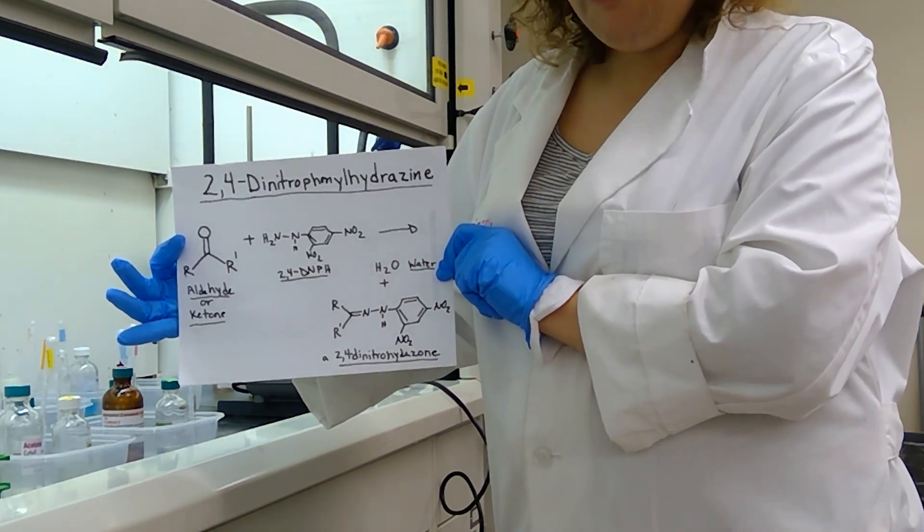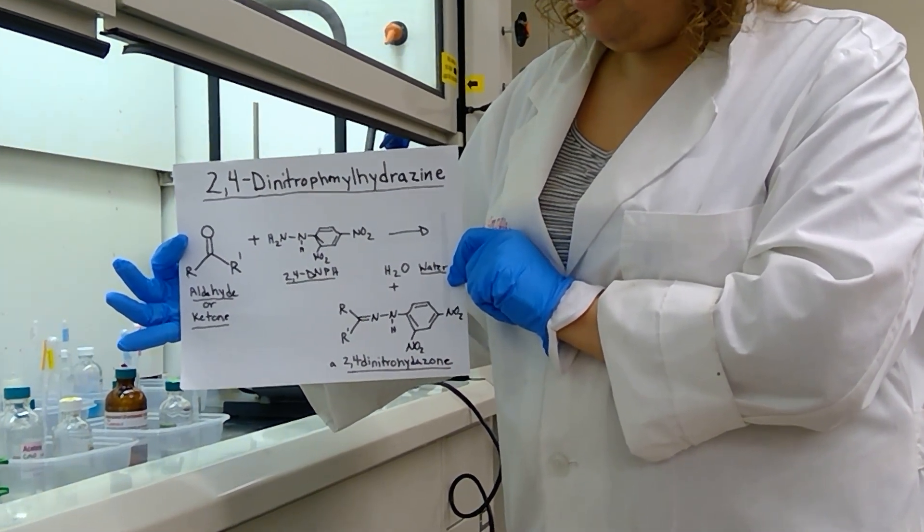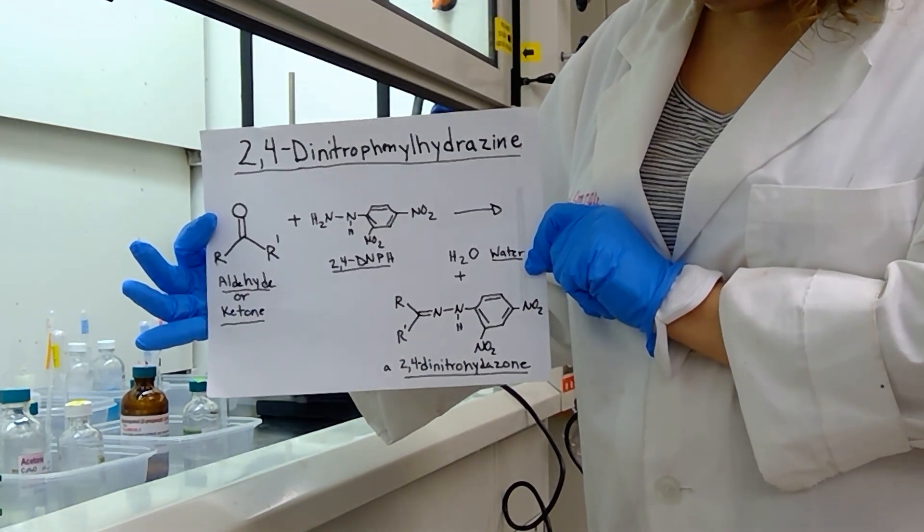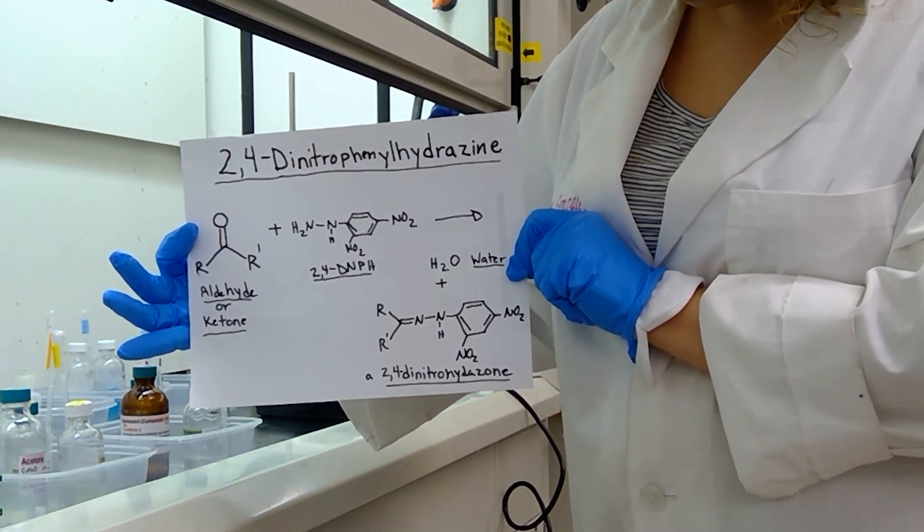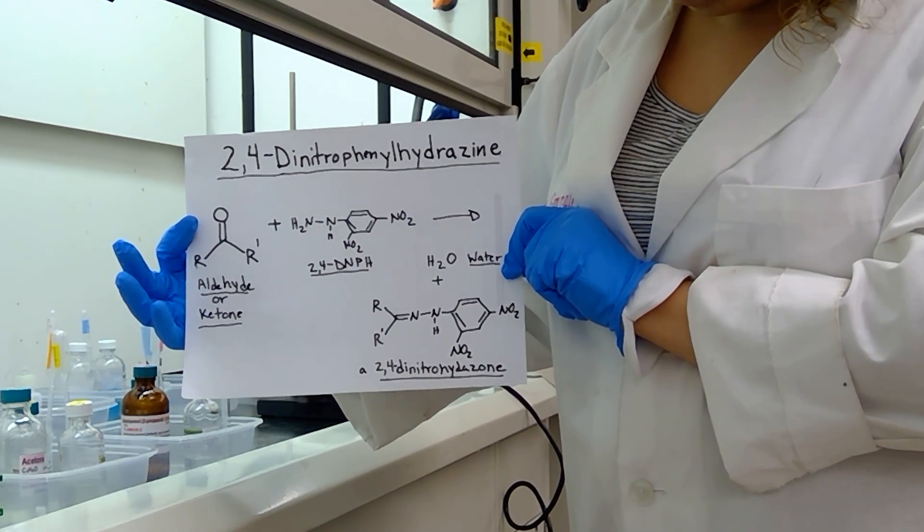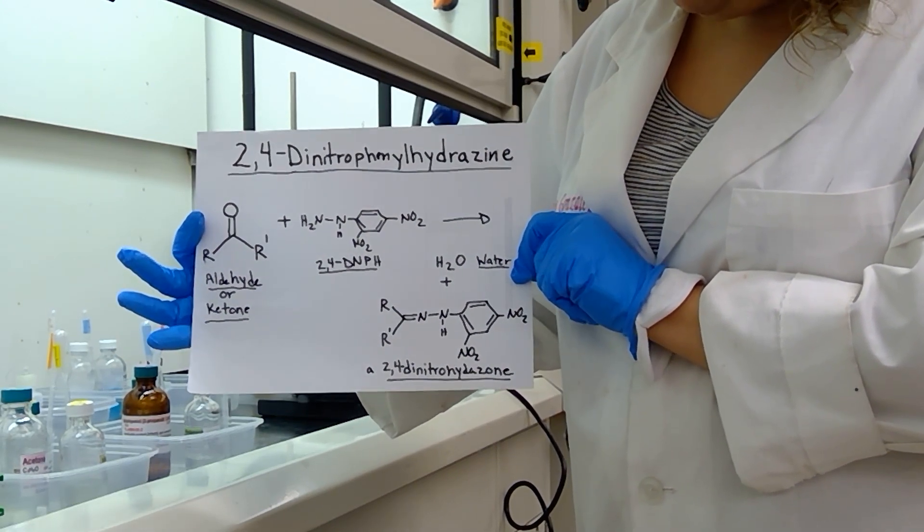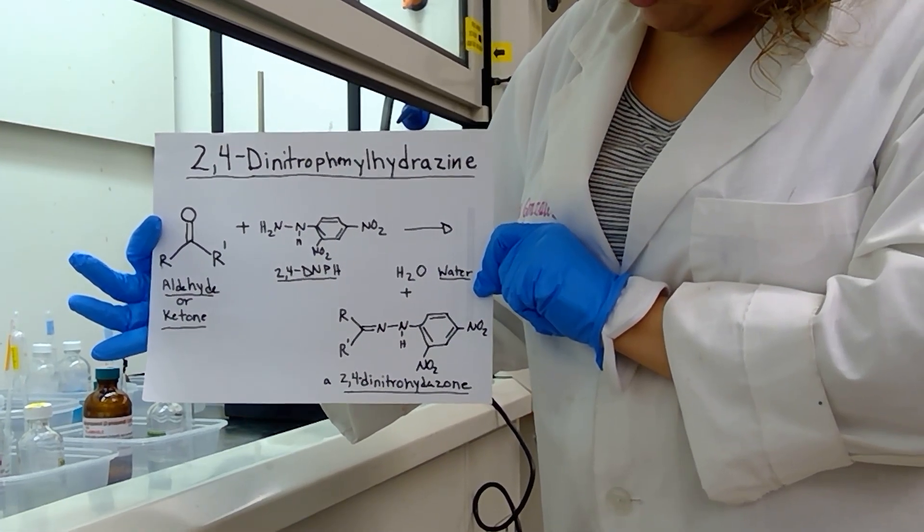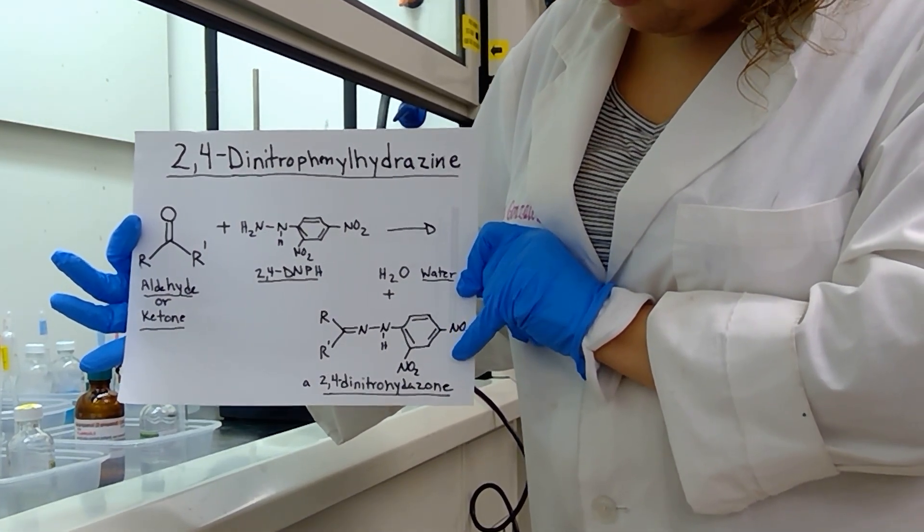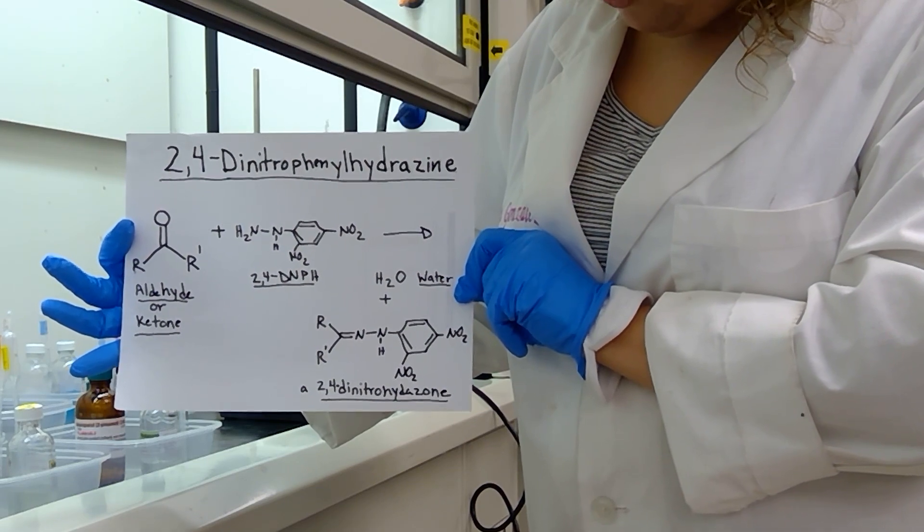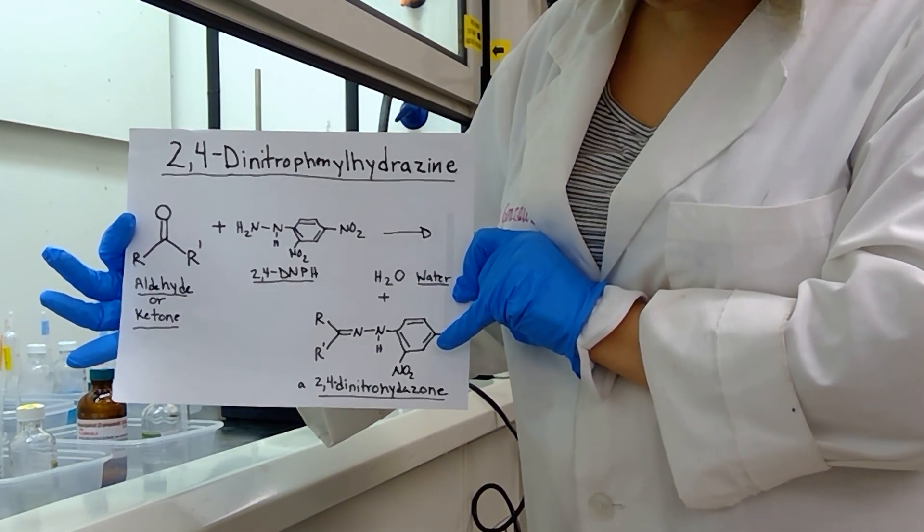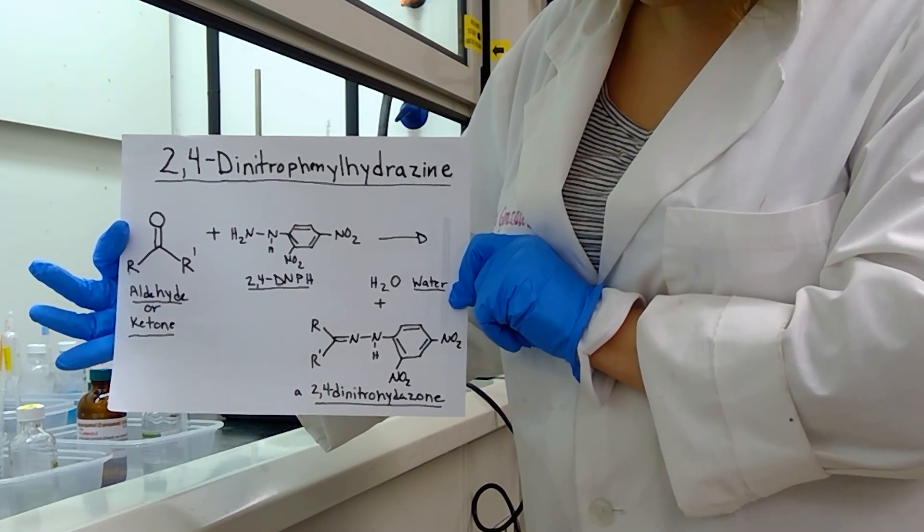Alright students, we are continuing on with experiment 20, the unknown aldehyde and ketone identification, and we are moving on to the 2,4-dinitrophenylhydrazine test. In this experiment, aldehydes and ketones will react with the compound 2,4-dinitrophenylhydrazine, and we should form water plus a 2,4-dinitrophenylhydrazone. These can be yellow or reddish precipitates, so we're going to see how well we do with our compounds.